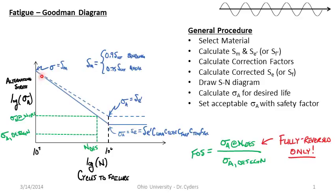We start with our initial material data SM, get an SE' based on the material data, then based on the loading situation, type of material, and surface finish, we de-rate the endurance limit. We draw the new corrected SN line and calculate, based on the number of desired cycles, what the allowable alternating stress would be to cause failure — a de facto factor of safety of one. We then design for factor of safety by dividing this number; for a factor of safety of three, we design for one-third of that alternating stress.